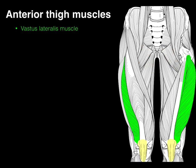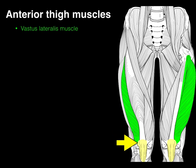Next is the vastus lateralis — 'vastus' because it's big, 'lateralis' because it's lateral. It arises from the linea aspera and part of the femur, courses down, its tendon engulfs the patella, and it inserts on the tibial tuberosity.